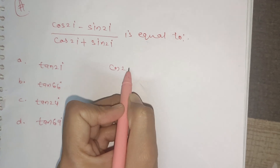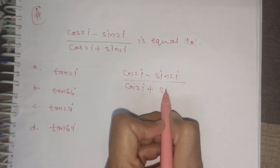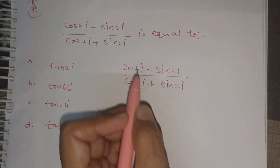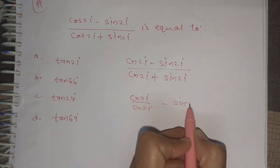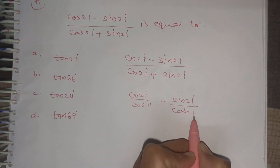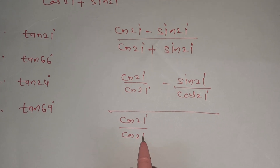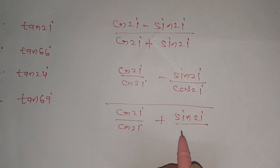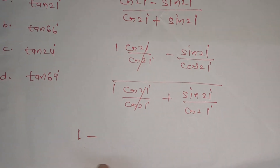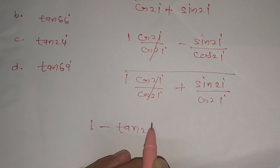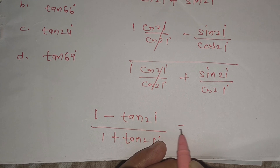Cos 21 degree minus sin 21 degree upon cos 21 degree plus sin 21 degree. This one cancels, this one cancels. We get 1 minus sin by cos, i.e., tan 21 degree, upon 1 plus sin by cos, i.e., tan 21 degree.